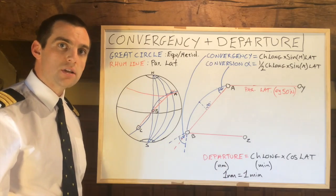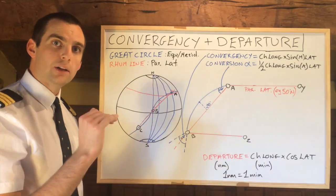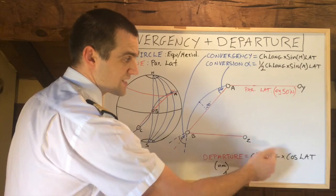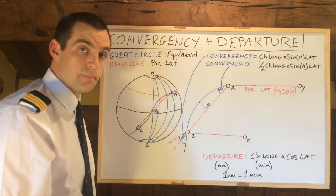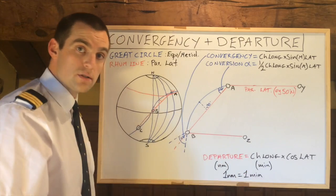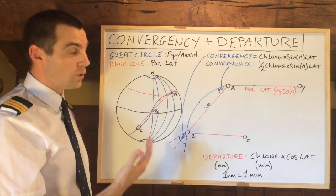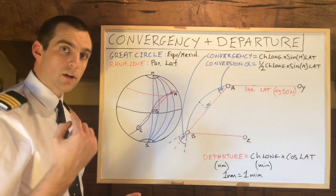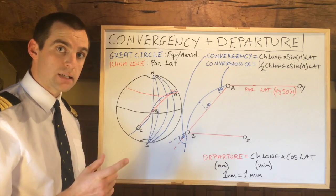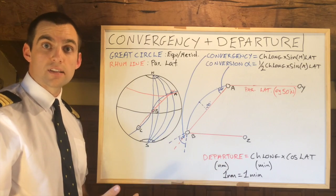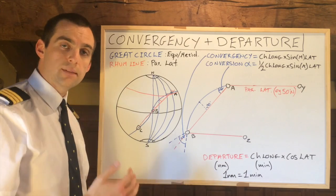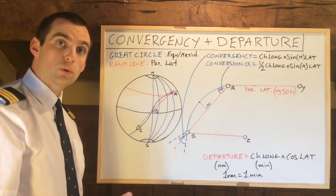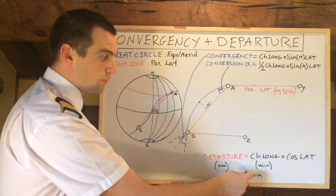Now, what is departure? Departure is the distance along a parallel of latitude. It's very important that the change in longitude is expressed in minutes, because one minute equals one nautical mile, so the equations match up mathematically. On the equator or any great circle line, one nautical mile equals one minute. The earth has 360 degrees; one degree is 60 minutes; each minute is one nautical mile. If you have a complicated latitude/longitude position in degrees, minutes, and seconds, convert it all into minutes.